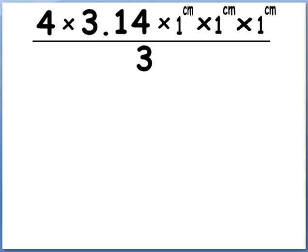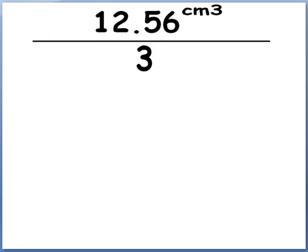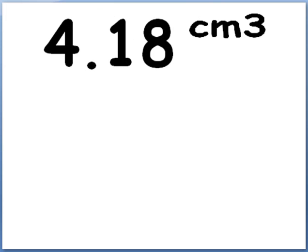So we plug that all in, and we wind up with 12.56 centimeters cubed. It's centimeters cubed because we had 1 centimeter times 1 centimeter times 1 centimeter. So that gives us centimeters cubed, and all of the numbers multiply out to 12.56. We simply then divide that by 3, and we wind up with 4.18 centimeters cubed. You would get more decimals beyond the 18, but we can kind of chop it off there since we used pi only to two decimal places.